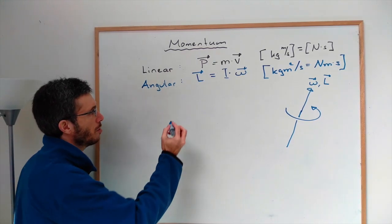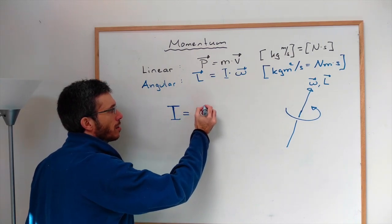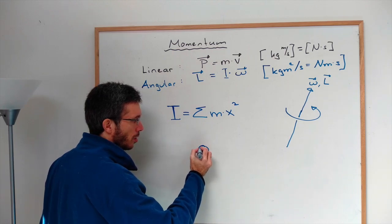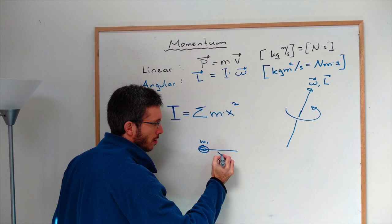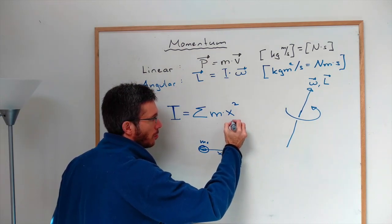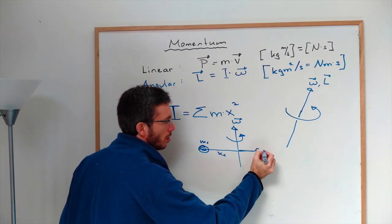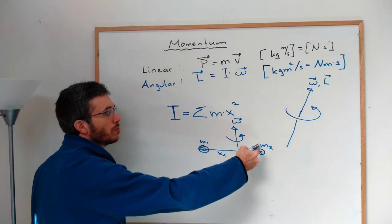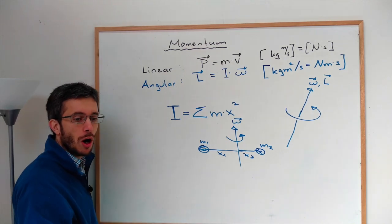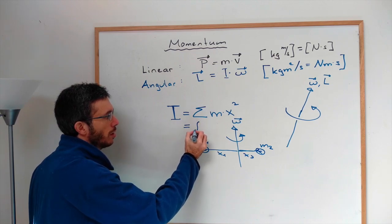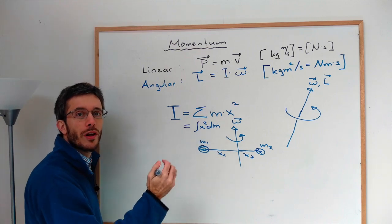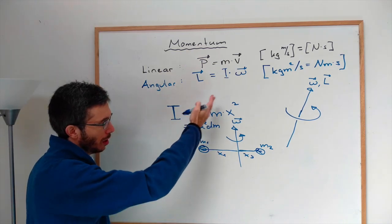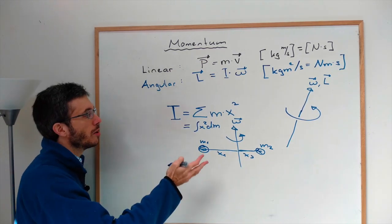In general, the inertia I is defined as the sum of all masses times the distance from the axis of rotation squared: I = Σ(m·x²). For example, a mass m₁ at distance x₁ and mass m₂ at distance x₂ gives I = m₁x₁² + m₂x₂². For uniformly distributed mass, you integrate x² dm using calculus. If you haven't taken calculus, use the summation form — your teacher can help with standard objects.